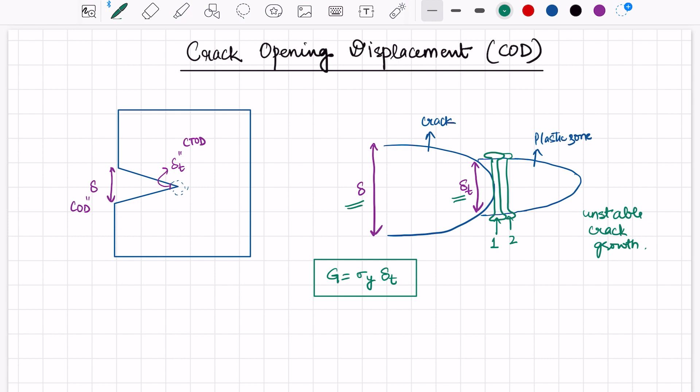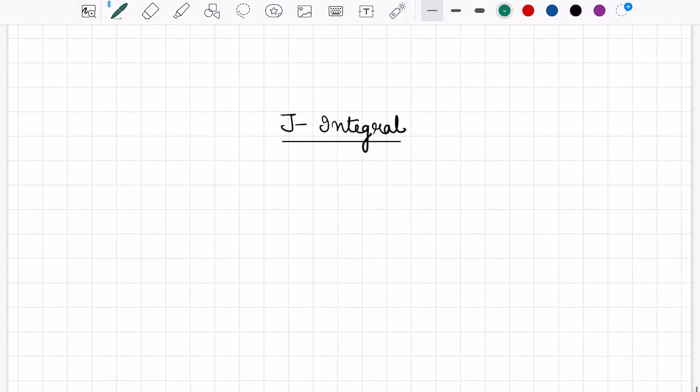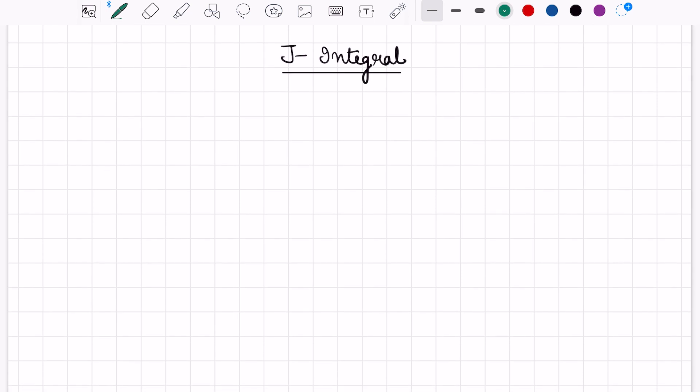The second model was given by James R. Rice to determine the fracture behavior of lower-strength ductile materials. It's a more comprehensive approach. Here he considered a 2D crack problem and suggested that the line integral related to energy can be considered in the vicinity of a crack. By considering this line integral, we can solve the problem of a two-dimensional crack.